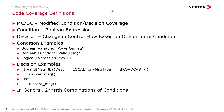Coverage definitions: MCDC, which stands for Modified Condition Decision Coverage, where the conditions are Boolean expressions and decisions are changes in control flow based on one or more conditions. A few condition examples would be Boolean variables, Boolean functions, and any logical expression.